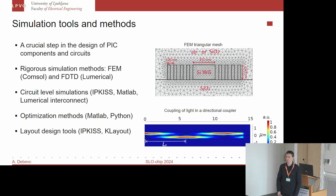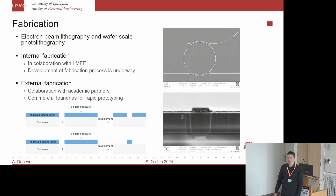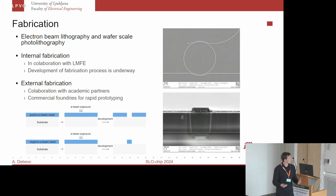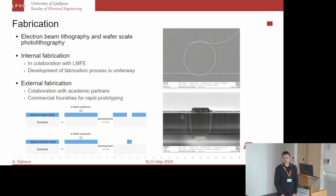Once we have the basic design, we define the layout for the mask using dedicated tools such as KLayout and similar EDA tools. Once the design is ready, we submit the mask for fabrication in two ways: in conjunction with the Laboratory of Microelectronics we are developing a fabrication process for silicon nitride photonic chips, but we also rely on external fabrication with academic partners or commercial foundries for rapid prototyping.